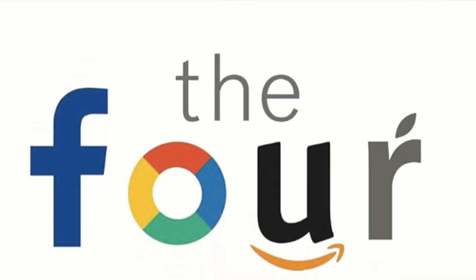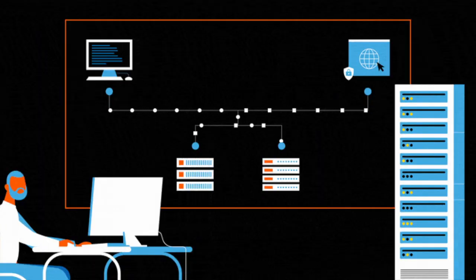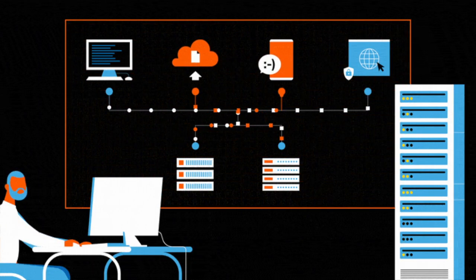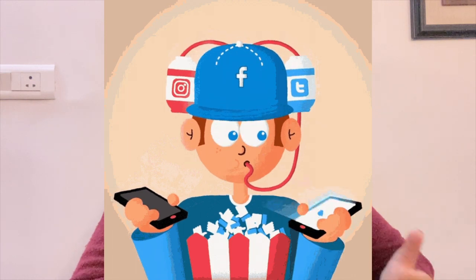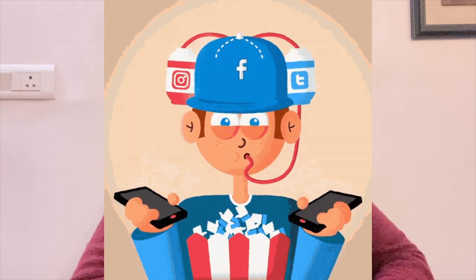Later on in web2, we saw the emergence of certain platforms like Google, Amazon, Facebook, etc. Not only did we get information from web pages, but the web pages started collecting information from us. Think about it — two different people will have different Facebook feeds, different Twitter feeds, and different Instagram explore pages. That's because our feeds are altered according to our likes, dislikes, and preferences — that is the information which we provide to these companies.